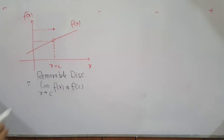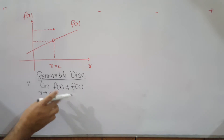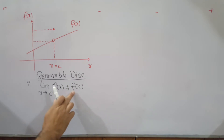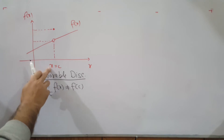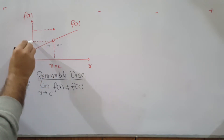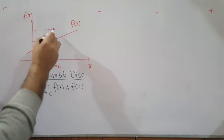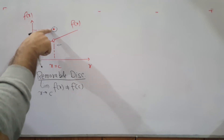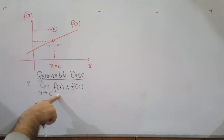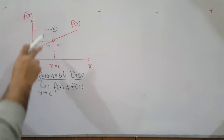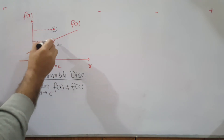Finally, another type is called removable discontinuity. This occurs when the limit exists — the left-hand limit and right-hand limit are both the same — but the limit is not equal to the function value at that particular point. Both are defined but they're not the same. This is called removable discontinuity because you can remove this discontinuity by redefining the function to equal the limit value.